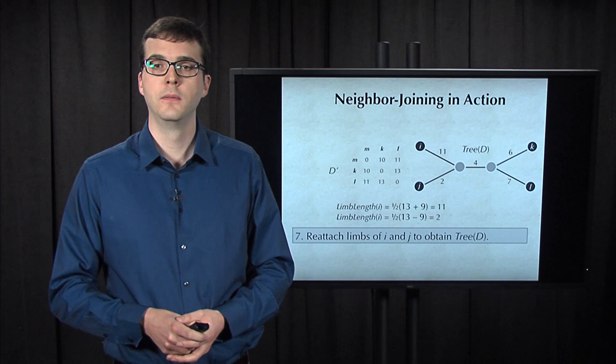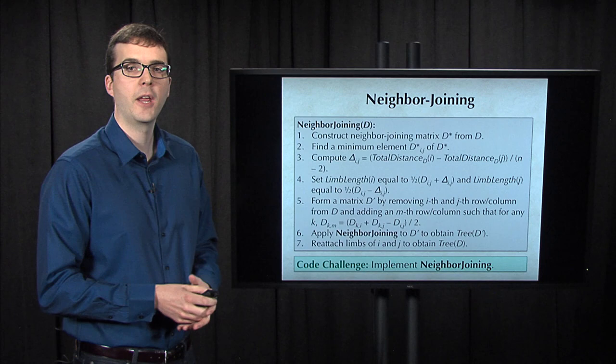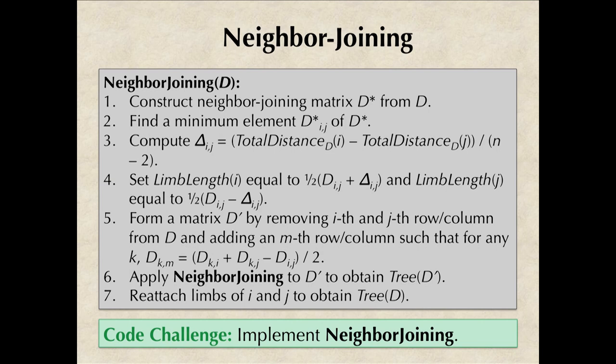Here's the summary of the neighbor-joining algorithm, which we apply recursively until we obtain a 2 by 2 distance matrix when we form an edge, and then we retrace our steps by adding limbs successively. Go ahead, try implementing it yourself.